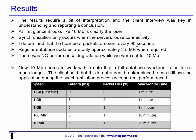With heartbeats, you want to find out how often they come out and the threshold at which the heartbeat is considered lost. In this example it was two — so two times 90 is 180 seconds. If the link is down for more than 180 seconds, it thinks the other server is down. For regular usage, there are database updates of only 2.5 megabytes, and those only happen when required — maybe once every minute or second depending on usage. There was no performance degradation at 10 meg at all. The everyday usage was not impacted, the synchronization took longer but the client said it's not a deal-breaker because you can still use the application during synchronization. That's how you use a WAN emulator to figure out your bandwidth requirements.